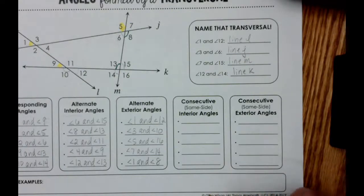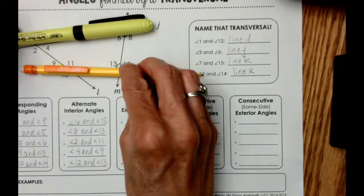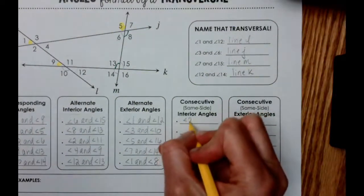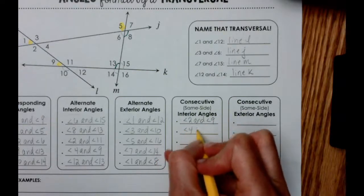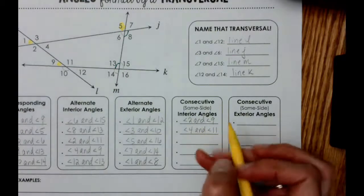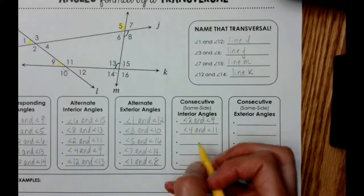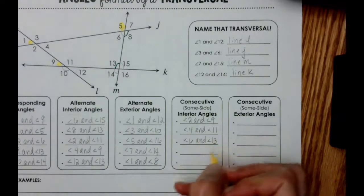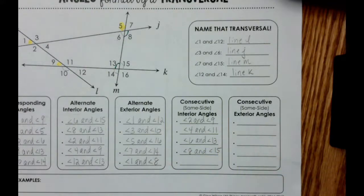Interior again means in between the two lines. Using the highlighter, these angles are in between the two lines, but they have to be on the same side this time. So we can say angle 2 and angle 9, angle 4 and angle 11, and angle 6 and angle 13 — those are both in between lines J and K — or angle 8 and angle 15.